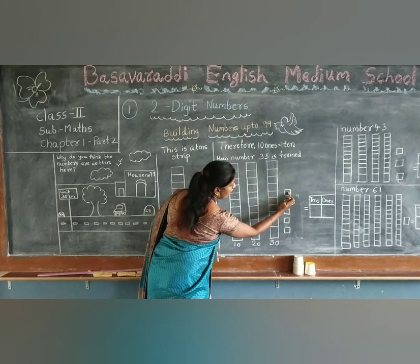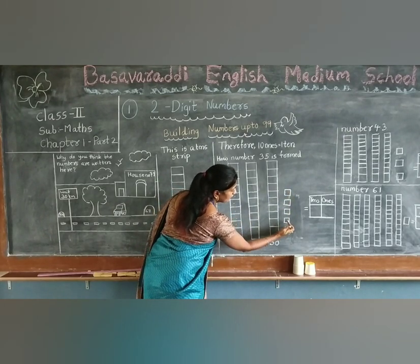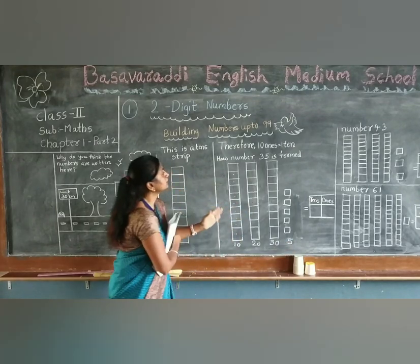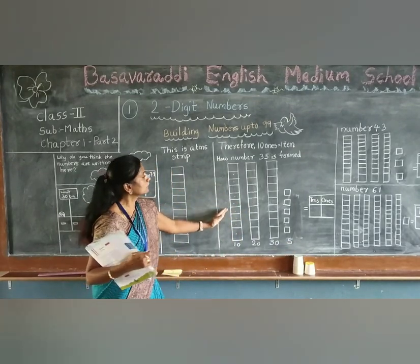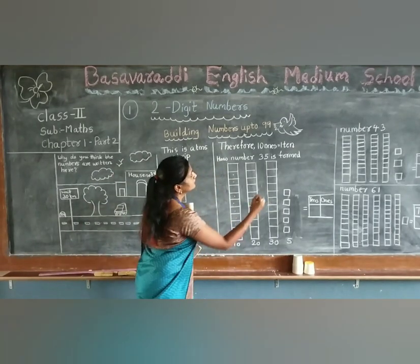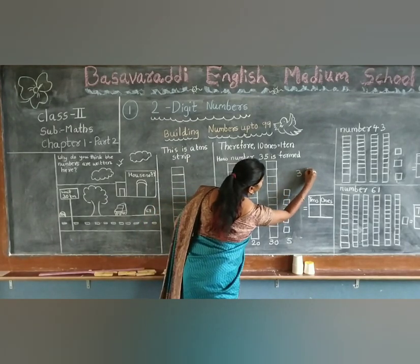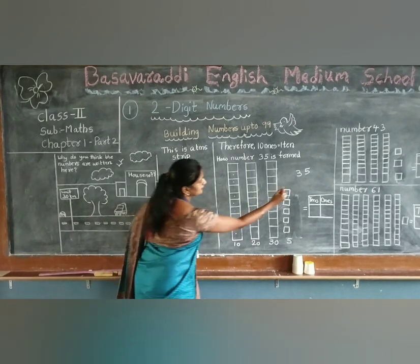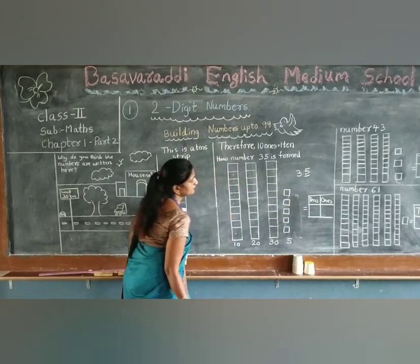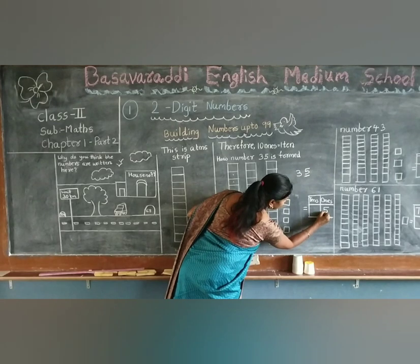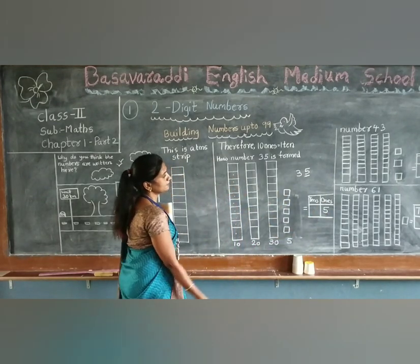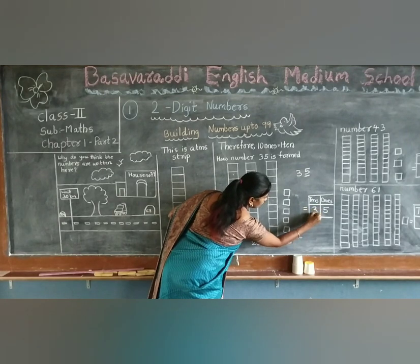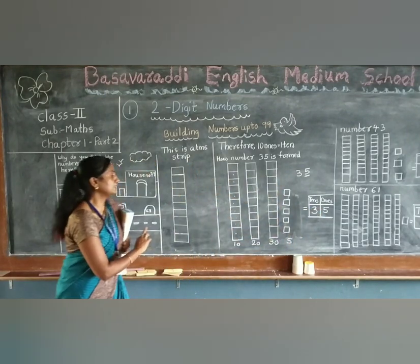Now five — one, two, three, four, five. So it is thirty-five. So how are you writing thirty-five? See — thirty, five. Always right side ones. This is what? Five is ones place, so it is five. Three is tens place, so it is thirty — thirty-five.